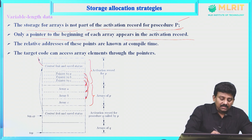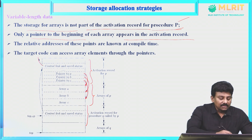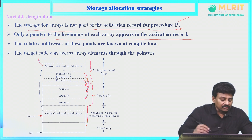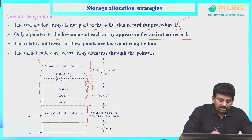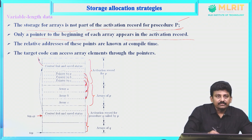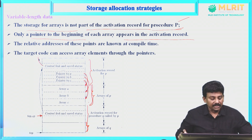The activation record for procedure Q, called by P, has the top stack pointer pointing to the next activation record. There is a separate portion for the arrays of Q and a separate portion for the arrays of P.